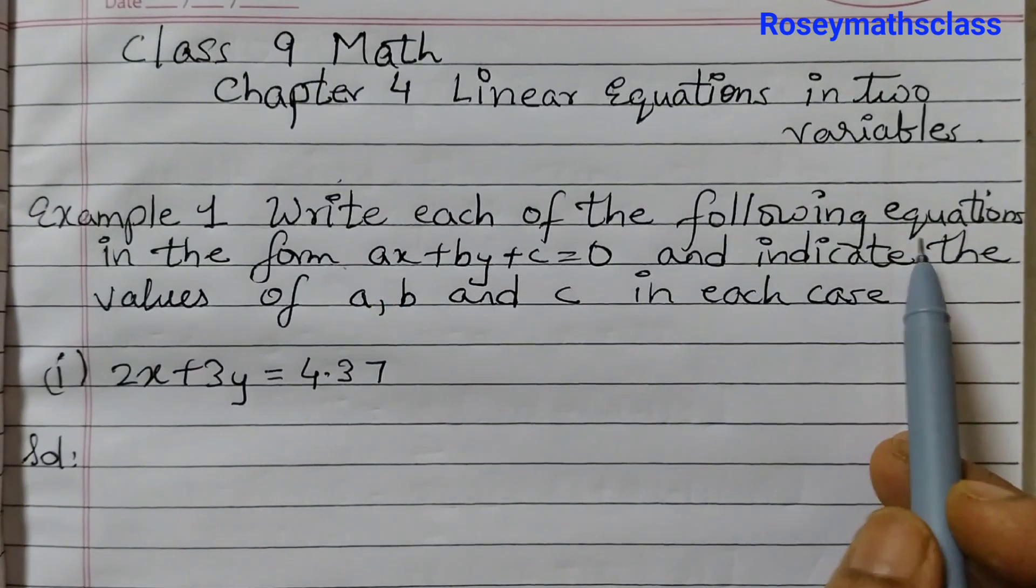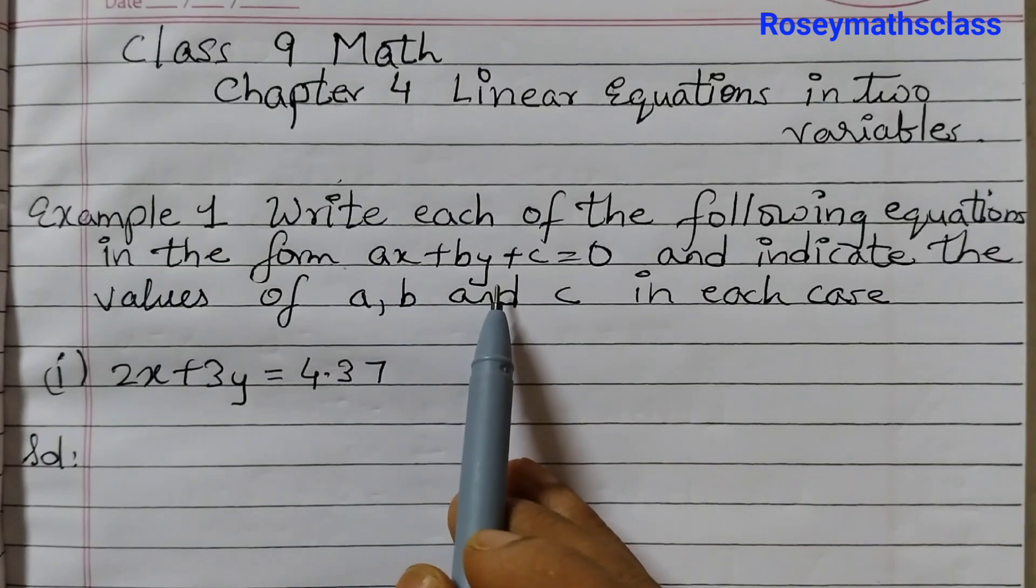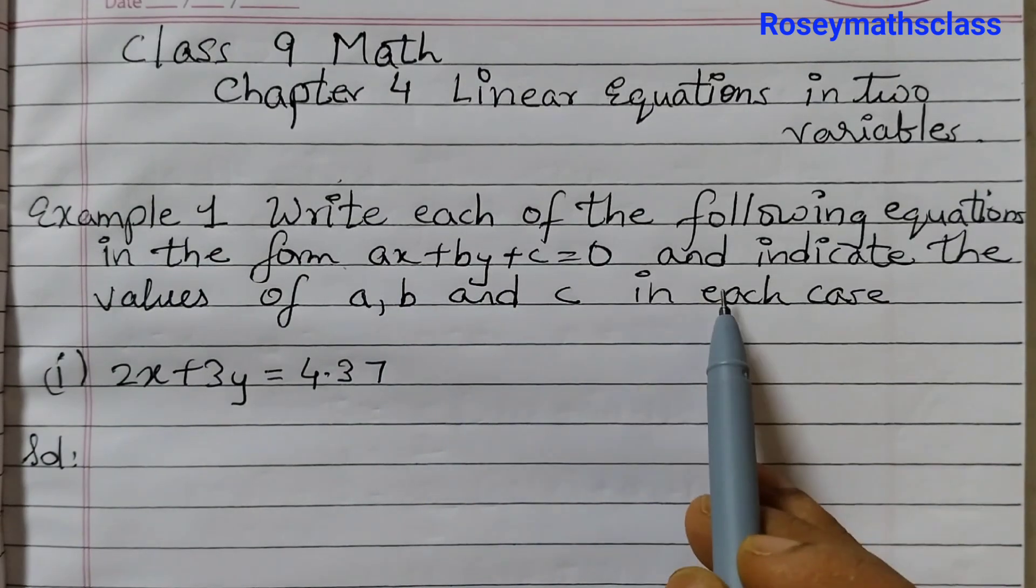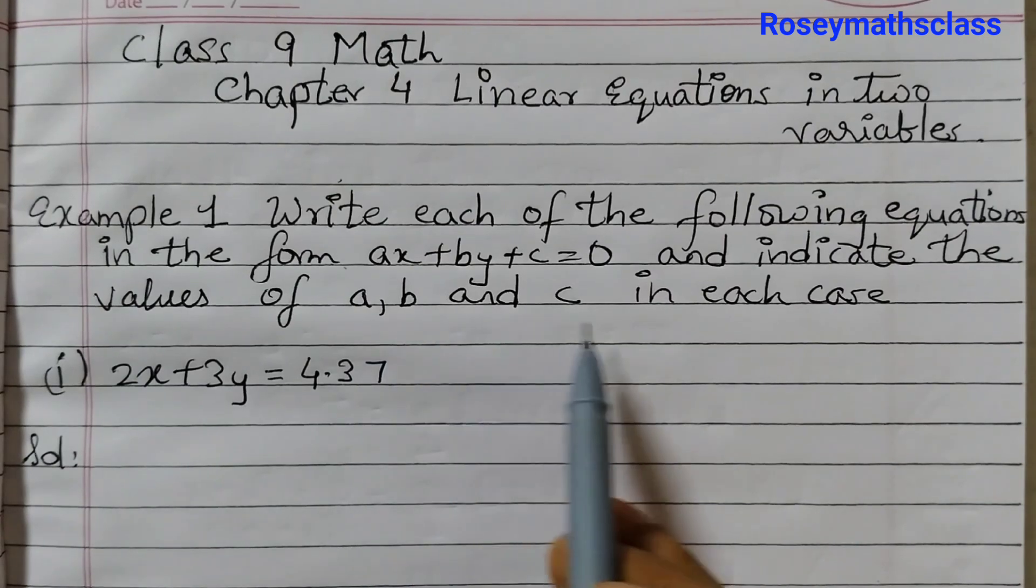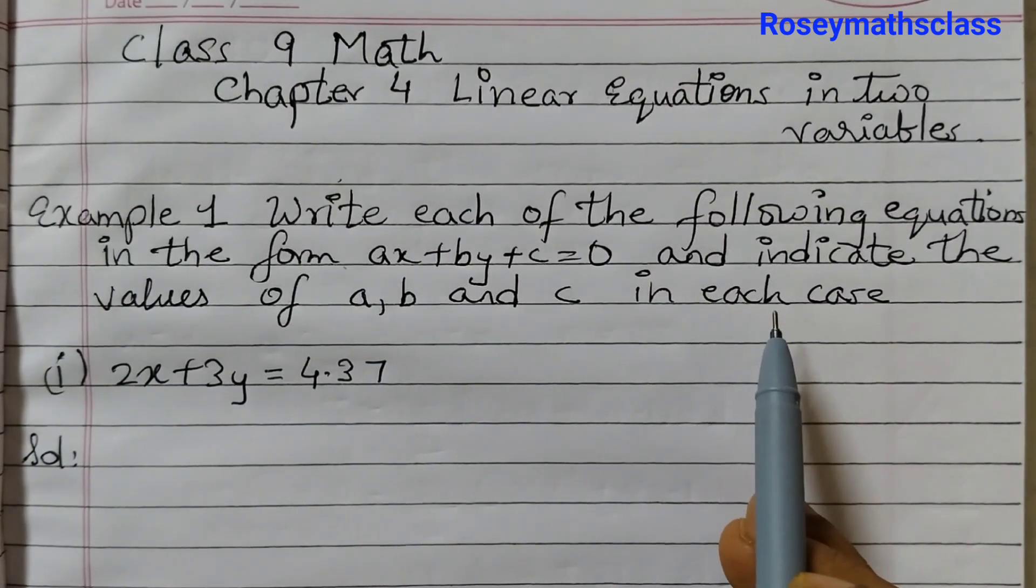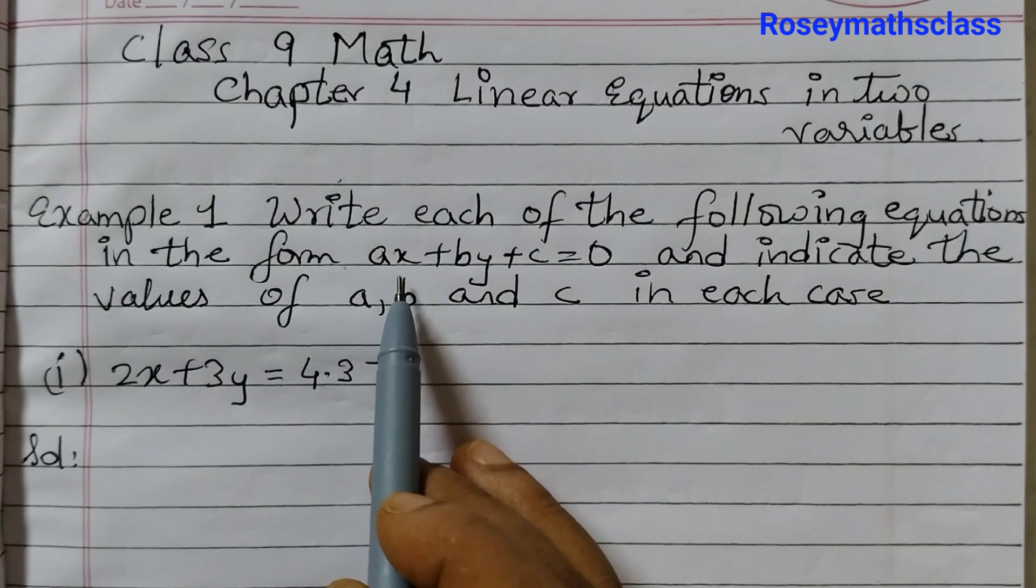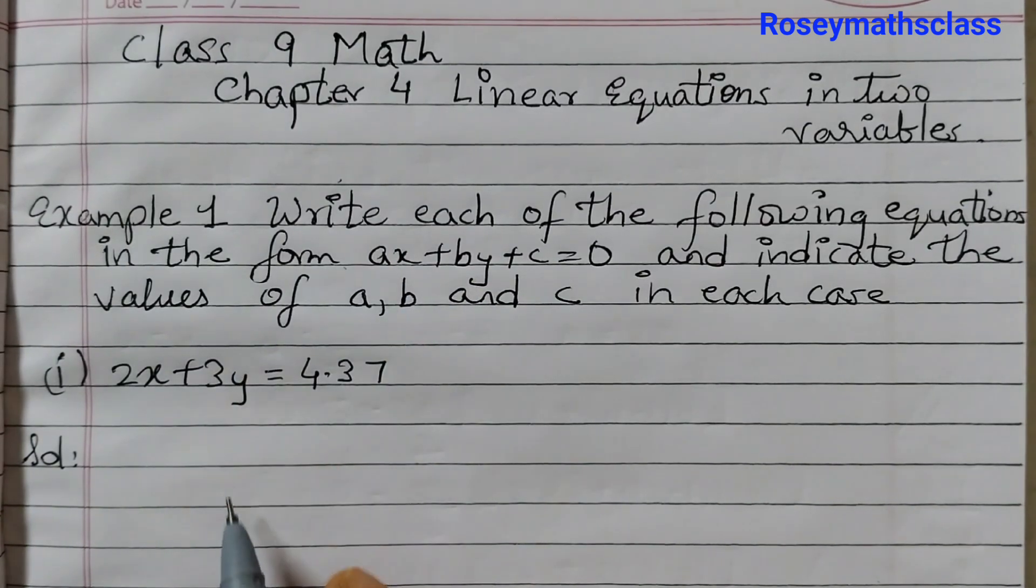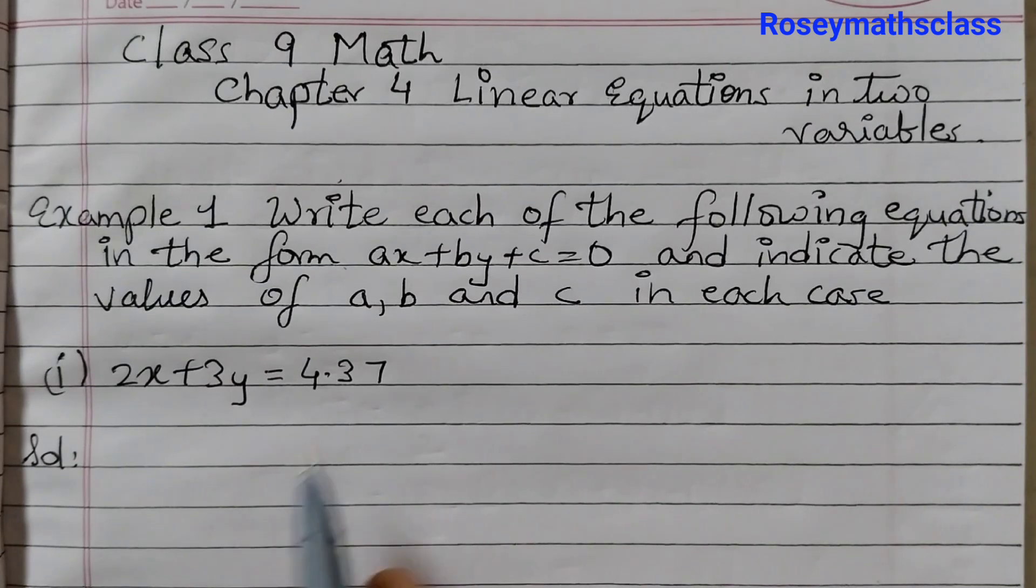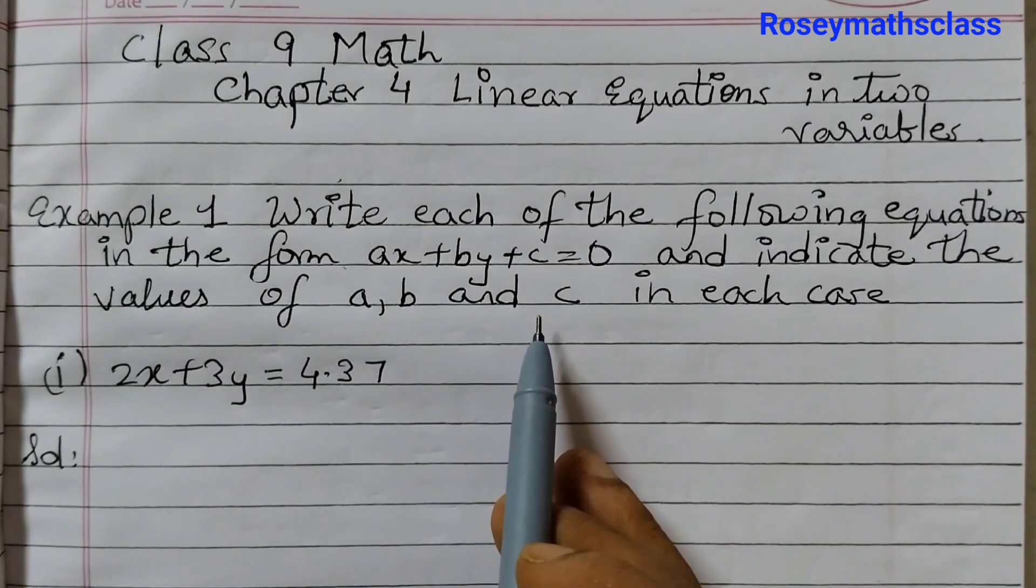Write each of the following equations in the form ax plus by plus c equals 0 and indicate the values of a, b and c in each case. Now this is a linear equation in 2 variables x and y and we need to write all these examples, that is 4 examples are given in this form and then write what is a, what is b and what is c.